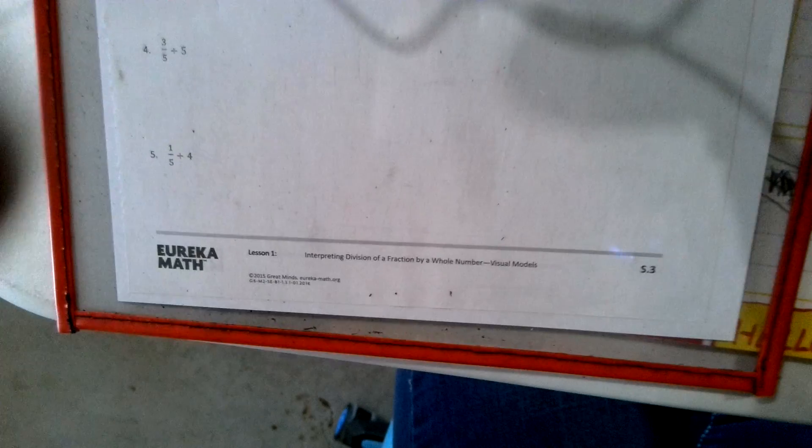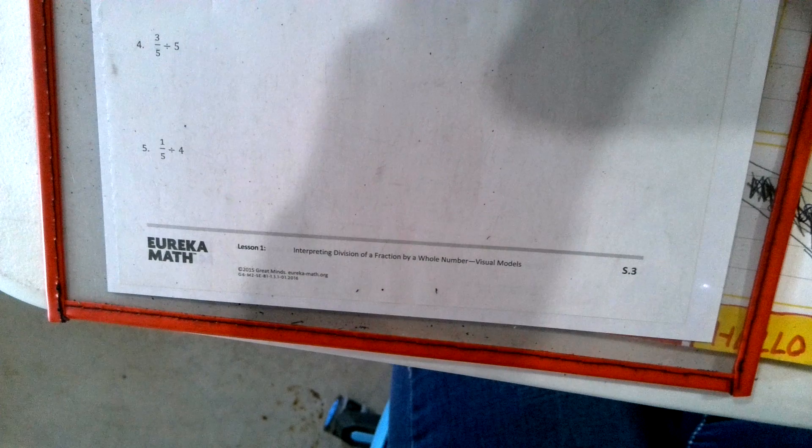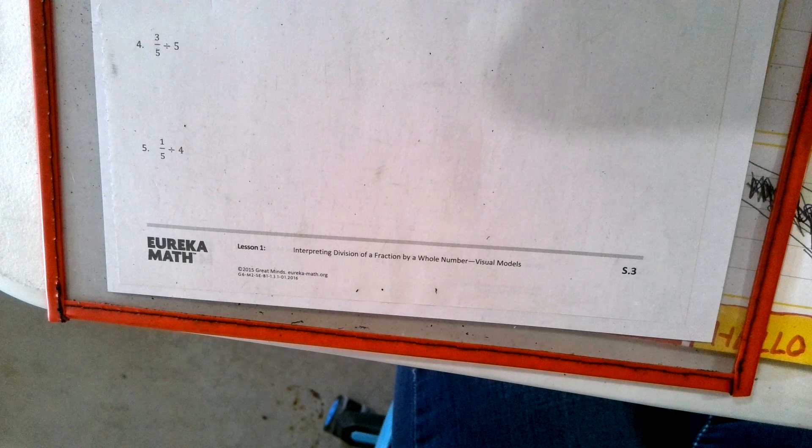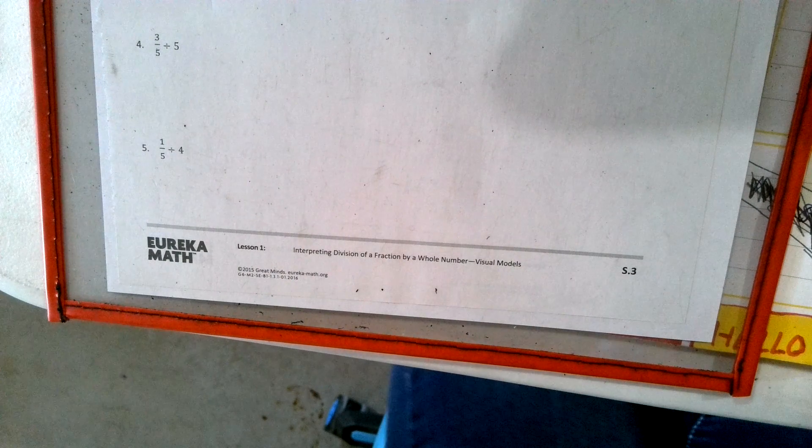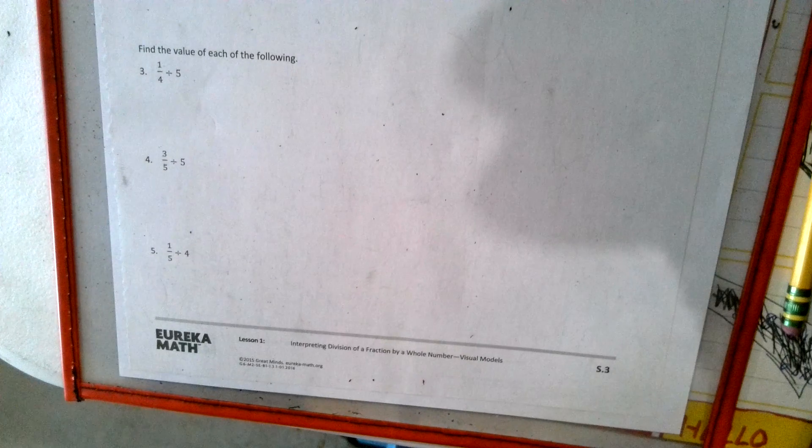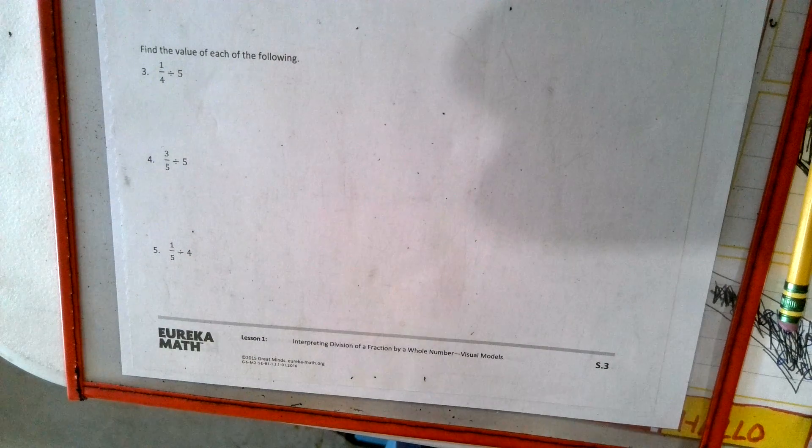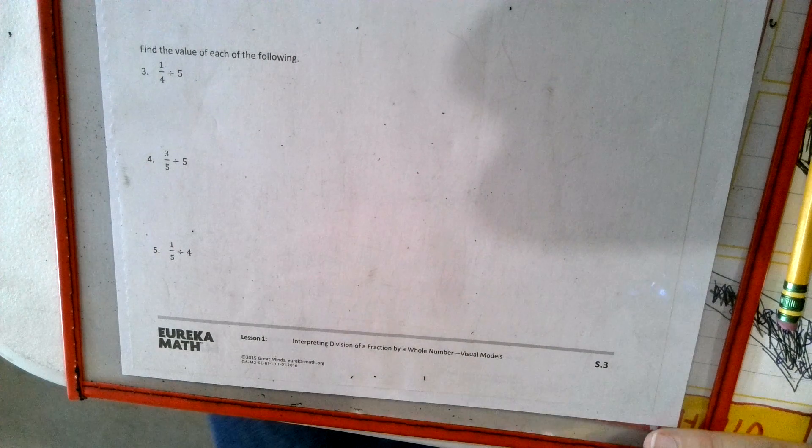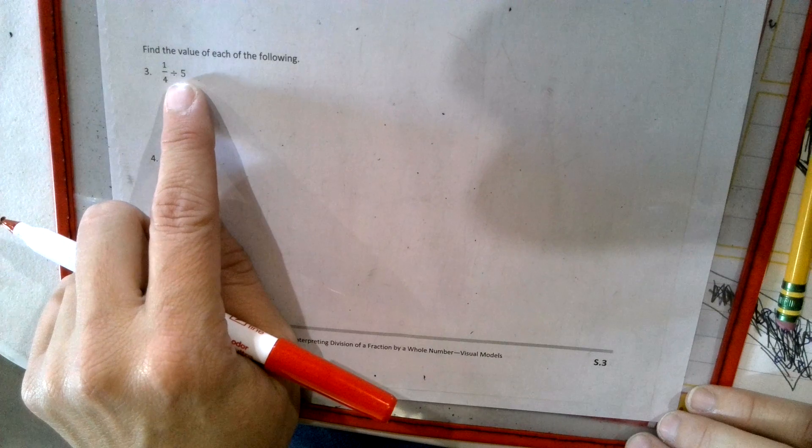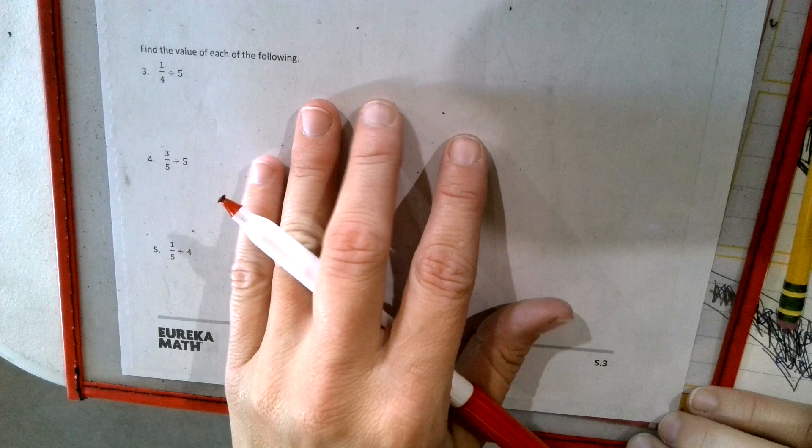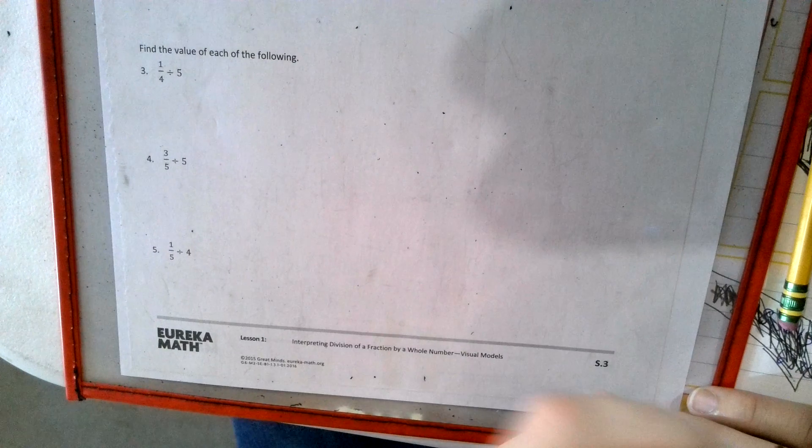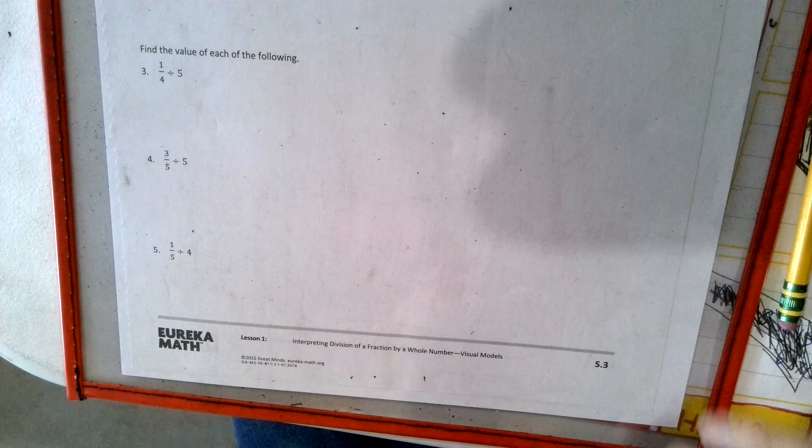Hello, this is Mrs. Bobby, and we are going to do Module 2, Lesson 1. This is on page S3 of your book, and we are going to divide fractions by a whole number, but we're going to do it with a tape diagram, and then I'm going to do it standard algorithm. Standard algorithm means I'm going to write it and make it look like normal math.